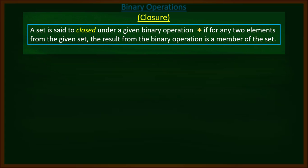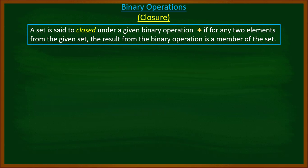Today we are going to talk about closure. A set is said to be closed under a given binary operation — let's say star — if for any two elements from the given set, the result from the binary operation is a member of the set.